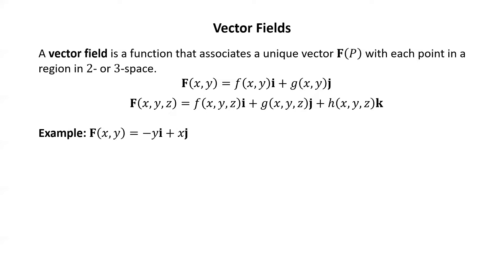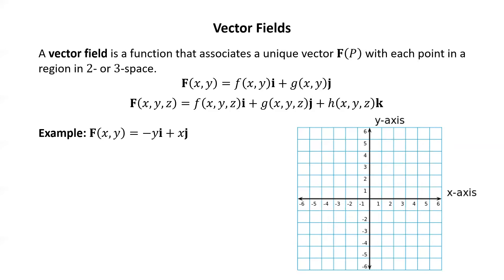Let's look at an example in two space first. Here we have a vector field F of XY equals negative Y times i plus X times j. Looking at the XY plane, let's plug some points in to visualize this vector field. For example, F of (0,0) is the zero vector, which we represent geometrically by drawing a point. In the XY plane we draw that point at (0,0) because the input is (0,0).